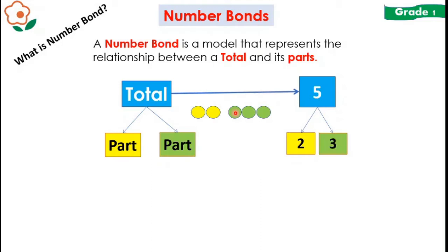Now, a number bond is important because it helps us to visually see how we break up a number. Now, do you think it matters if I put 2 here and 3 here, or I put 3 in the first box and 2 in the second box?